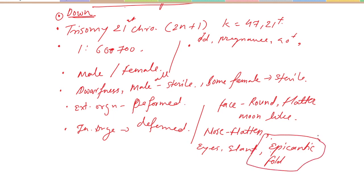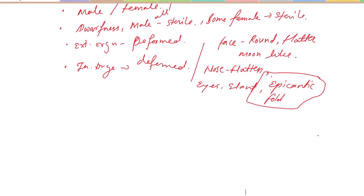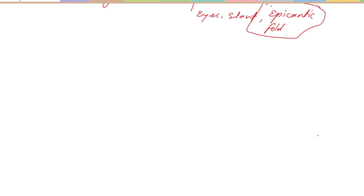Specific symptoms of Down syndrome include a round, flat, moon-like face (mongoloid appearance), flattened nose, slanted eyes, and an upper eyelid with an epicanthic fold — a typical mongoloid feature. Previously this was known as mongolism, but that term should not be used per international guidelines. Prevention is by avoiding late pregnancies.